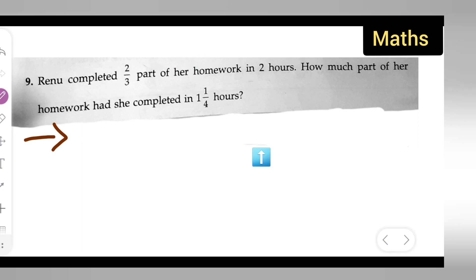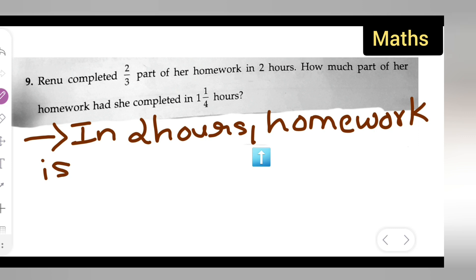First thing, we're going to write what is given. In 2 hours, homework completed is equal to 2/3. In 2 hours, Renu completed 2/3 part of the homework. This is already given in the question.